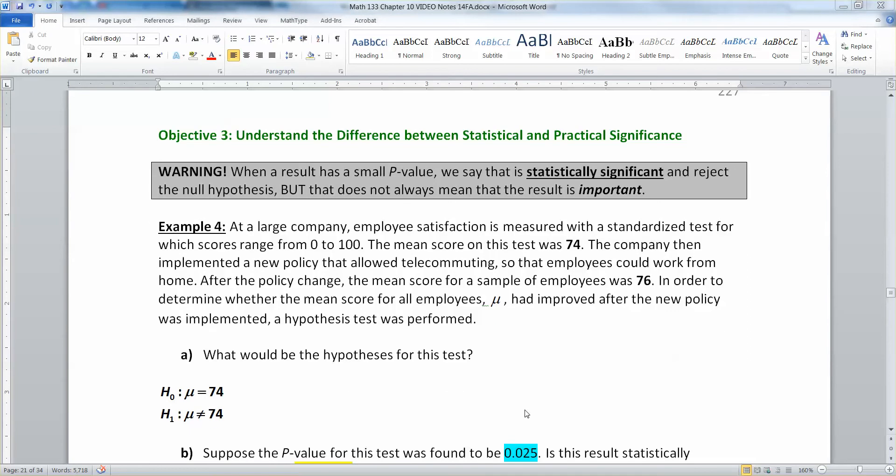At a large company, employee satisfaction is measured with a standardized test for which scores range from 0 to 100. The mean score on this test was 74. The company then implemented a new policy that allowed telecommuting so that employees could work from home. After the policy change, the mean score for a sample of employees was 76.